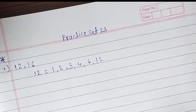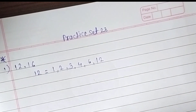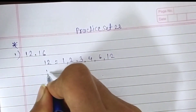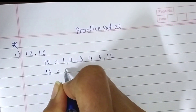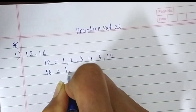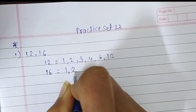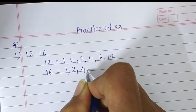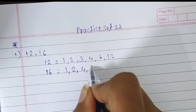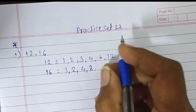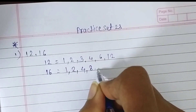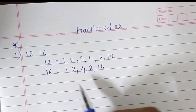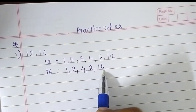Now the factors of 16. 16 also comes in the 1's table, the 2's table, the 4's table, the 8's table, and then 16 itself — 16 ones are 16. So the factors of 16 are 1, 2, 4, 8, and 16.